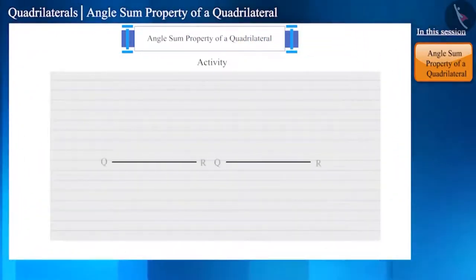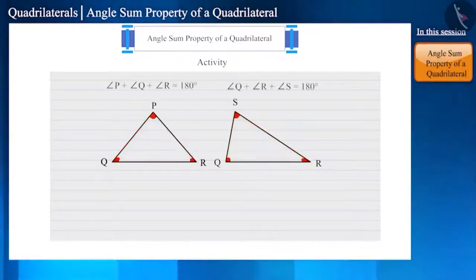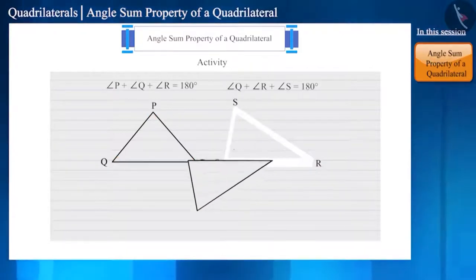Let's create two triangles with the same base on a paper. Let's name the first triangle as PQR and the second triangle as QRS. We know that the sum of the three angles of a triangle is 180 degrees. Now, let's connect these two triangles to the base QR.